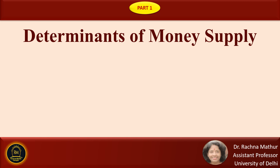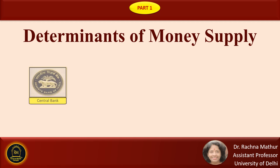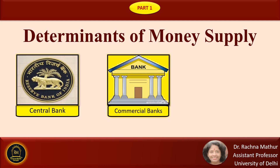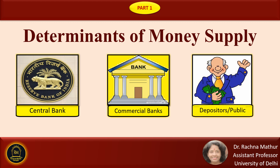Hello everyone. In this presentation, we are going to discuss the determinants of money supply. There are three determinants of money supply: number one is the central bank determinant, number two is the commercial bank determinants, and number three is the depositors or public determinant of money supply. We will discuss all three determinants one by one in detail.